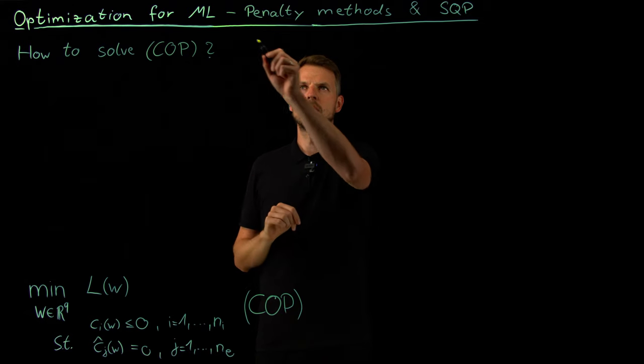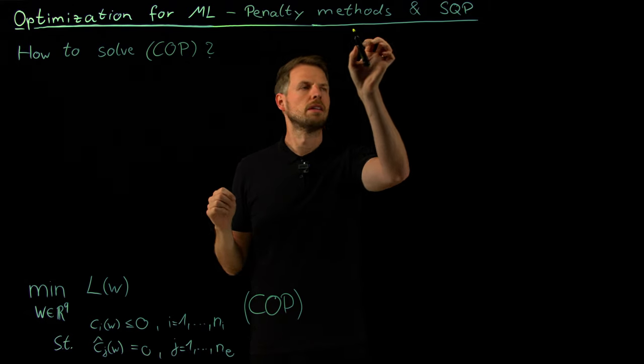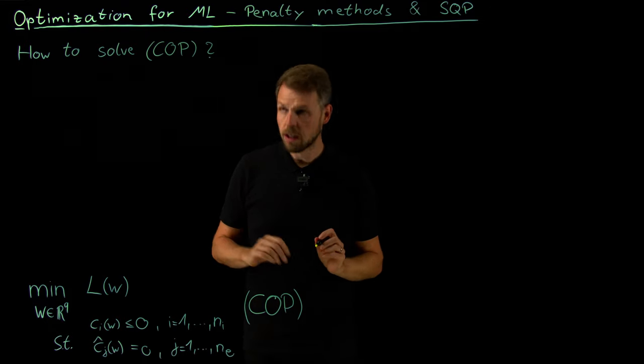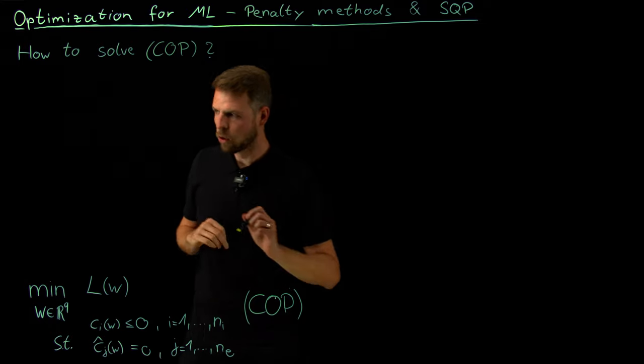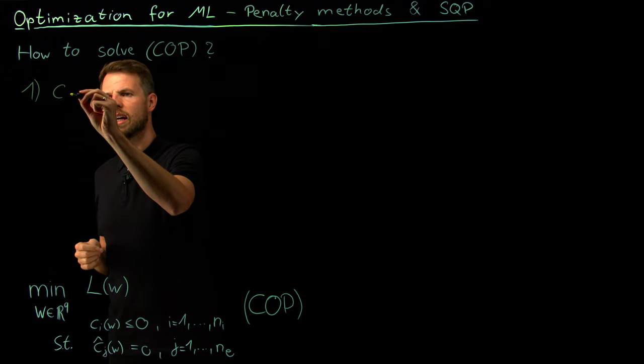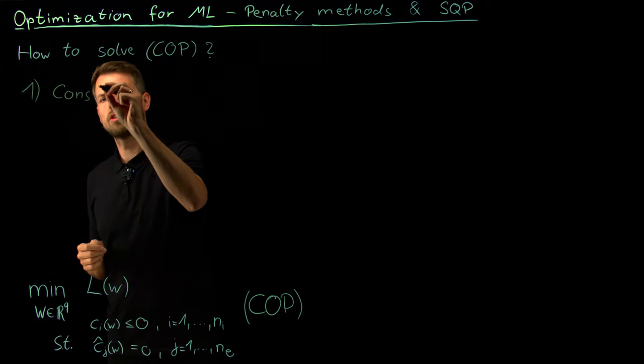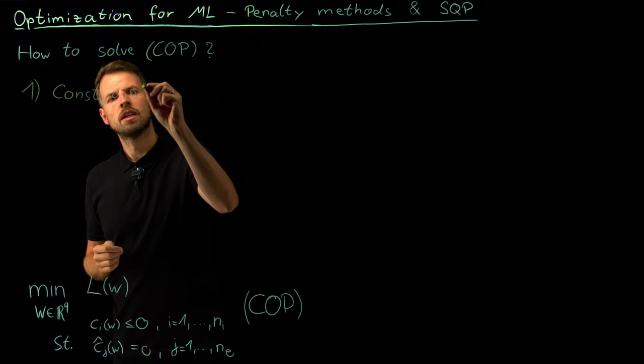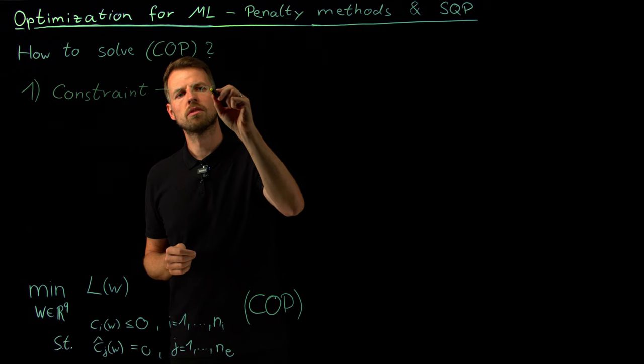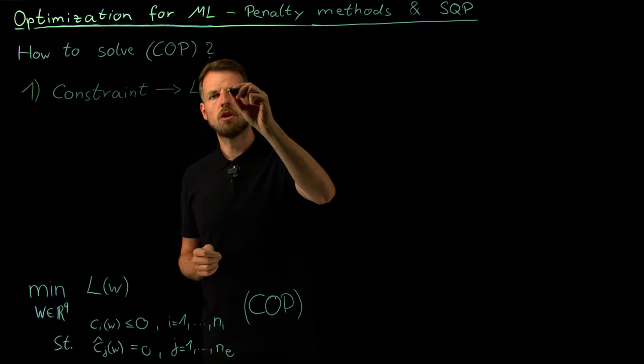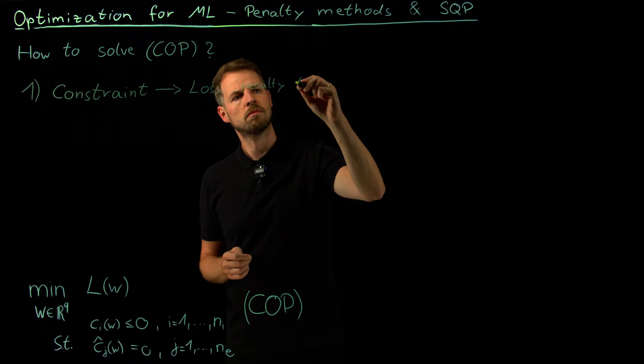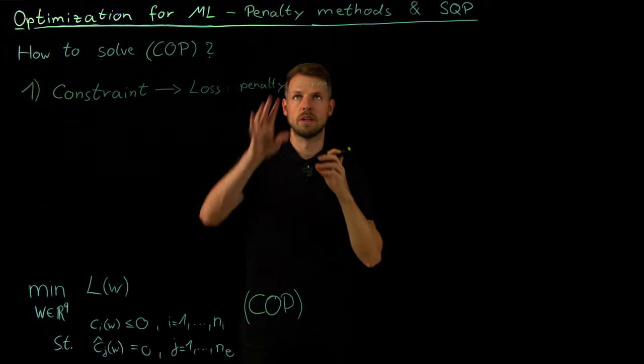And two ways to do this are what on the video is called penalty methods and what's called sequential quadratic programming or SQP. And let's start with the penalty methods. So approach number one would be to take the constraint and you guessed it already I guess because it's something we have seen a couple of times now. We take the constraint and transfer it into a loss in the form of a penalty term. This is why it's called penalty method.